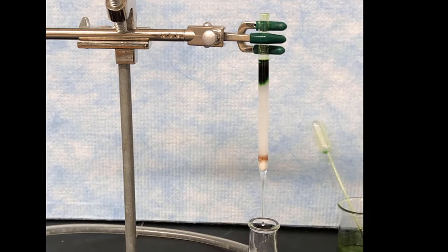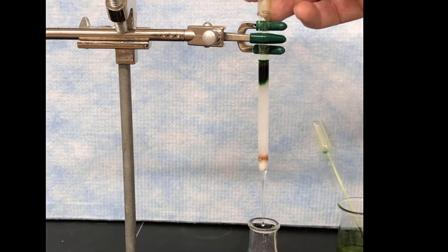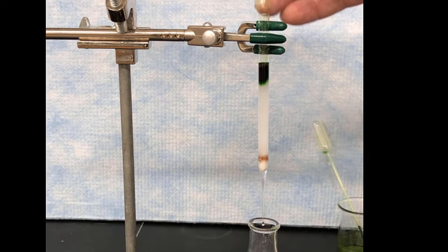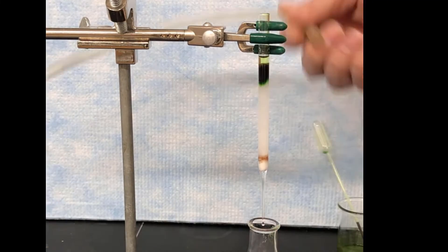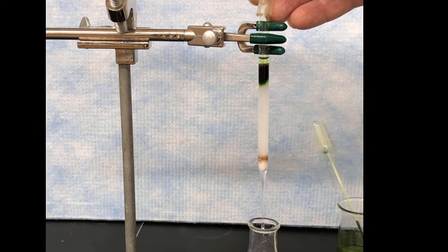Next we're going to add a bit of hexane to the top, and that is going to help chase the pigments out of the sand layer and get them seeded onto the silica gel. That's the purpose of that. I'm going to do just a little more there to get the green pigments all adsorbed onto the silica gel.